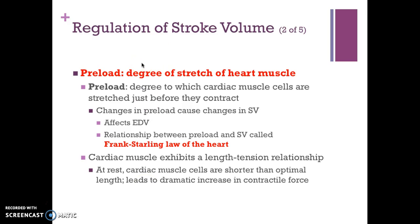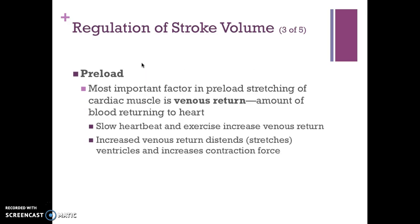Preload is the degree to which cardiac muscle cells are stretched just before they contract — like how far a rubber band is pulled back before release. Changes in preload cause changes in stroke volume by affecting end-diastolic volume. This relationship is called the Frank-Starling law of the heart. Cardiac muscle exhibits a length-tension relationship; at rest, cardiac muscle cells are shorter than optimal length, leading to a dramatic increase in contractile force when stretched. The most important factor in preload is venous return — the amount of blood returning to the heart. Increased venous return distends the ventricles and increases contraction force.